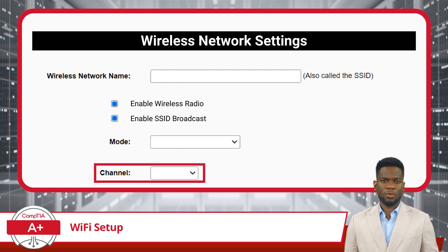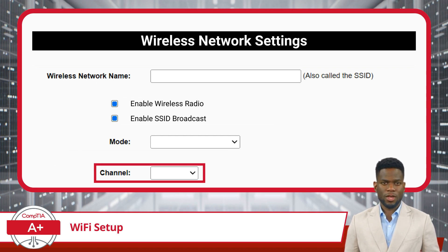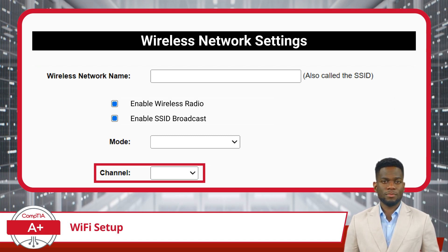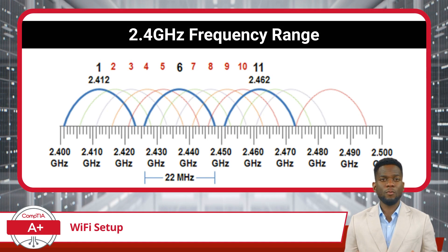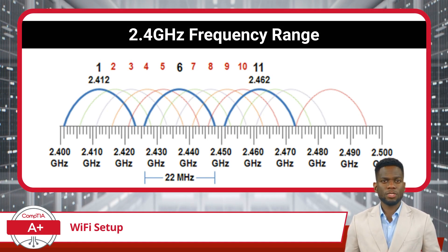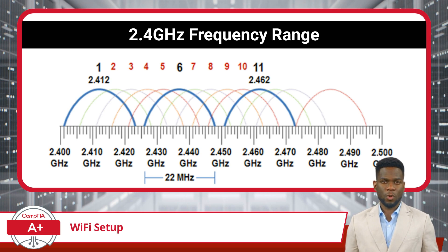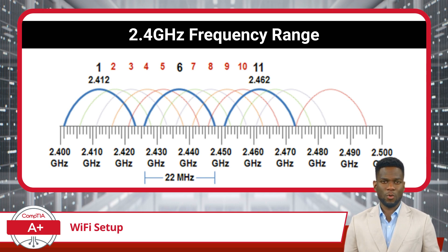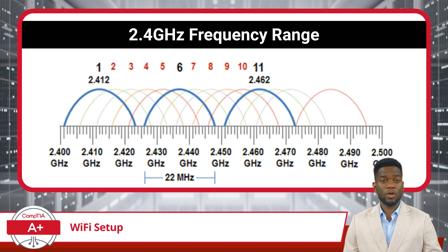Now we move on to channel selection. Here we need to choose a specific radio frequency within the available frequency spectrum for transmitting and receiving data. Each channel operates within a specific frequency range and is used to avoid interference with other nearby wireless networks. In the United States, for 2.4 GHz Wi-Fi networks, there are 11 channels available, labeled as channels 1 through 11, with a frequency range from 2.412 GHz to 2.462 GHz. However, in practice, only channels 1, 6, and 11 are considered non-overlapping channels, meaning they don't interfere with each other when used simultaneously.